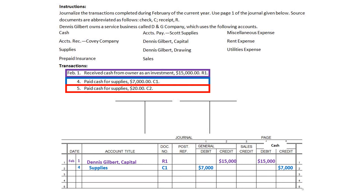For the third transaction — paid cash for supplies again — we put the date '5.' We don't need to write 'Feb' since we only do that the first time in February or at the top of the page. We write supplies, doc C2 (check number two). The debit is $20 to supplies and the credit is $20 to cash. Hope this helps — best of luck, and we'll see you for the next lesson soon.